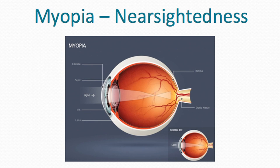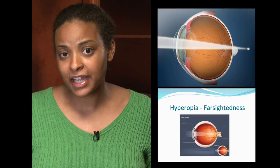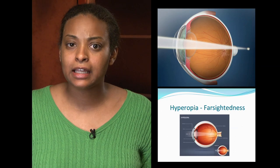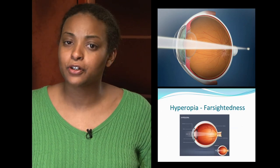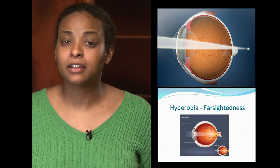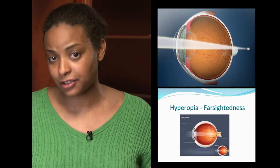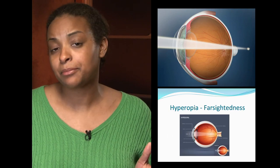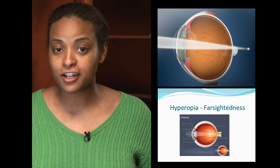If the cornea bulges too much, or if the eyeball is slightly longer than normal, light will refract or bend in front of the retina, causing nearsightedness or myopia. On the other hand, if the cornea is too thin or if your eyeball is too short, light will refract or bend behind the retina, causing hyperopia or farsightedness.